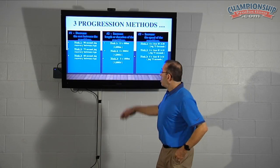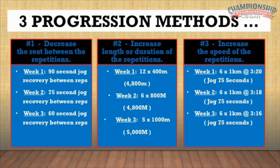However, as a coach, you could move to method number two, which is to increase the length or duration of the repetitions. Here is a typical progression from the beginning of the season and the first three weeks of cross-country. You might assign twelve repeat 400 meter reps at critical velocity pace. Week number two, you double the length to 800 meter reps, keeping the volume the same at a total of 4800 meters, which is roughly three miles.